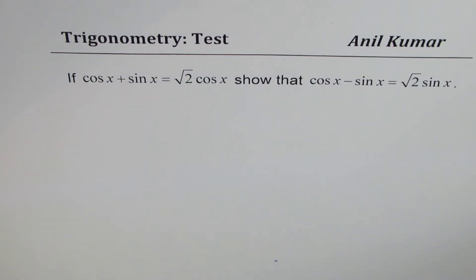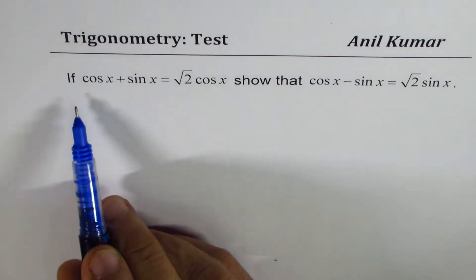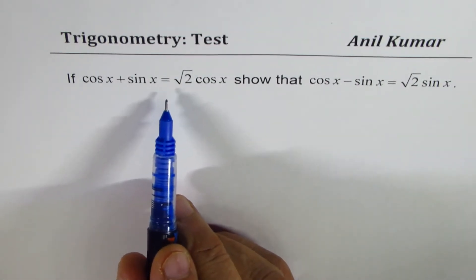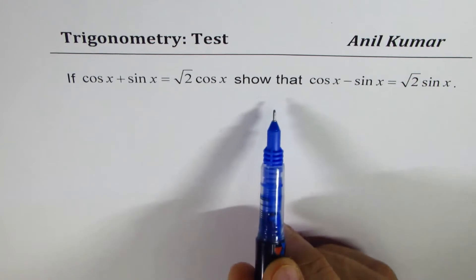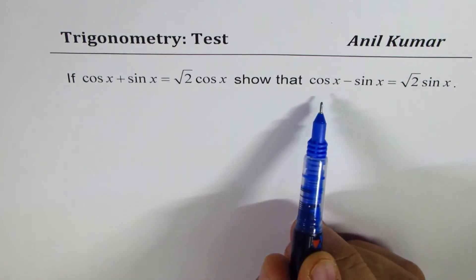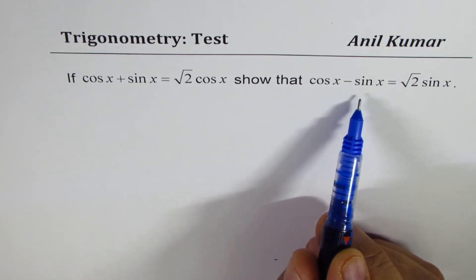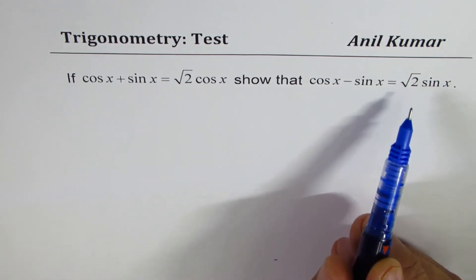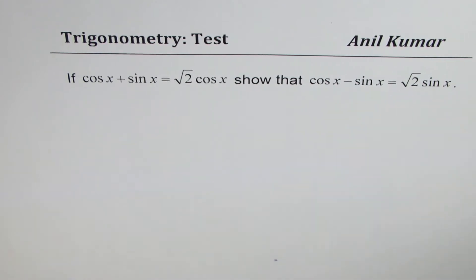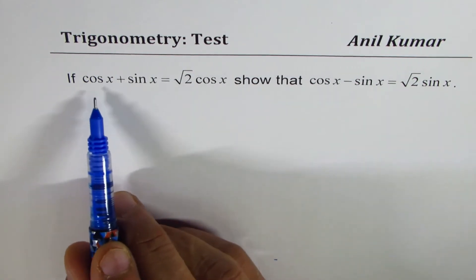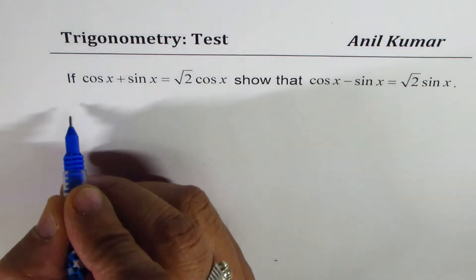I'm Anil Kumar sharing with you a test question on trigonometry. If cos x plus sin x equals square root 2 cos x, show that cos x minus sin x equals square root of 2 sin x. You can pause the video, answer the question, and then look into my suggestions. Let's begin from what is given to us.